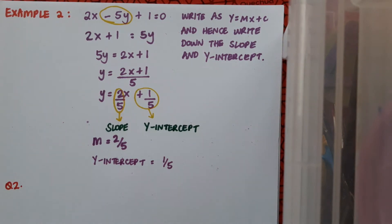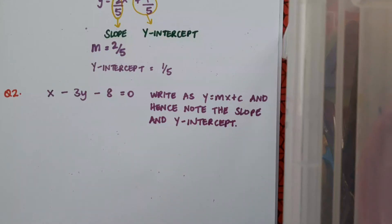Now a question for you: x minus 3y minus 8 equals 0. Write it as y equals mx plus c and note the slope and the y-intercept. Pause the video, complete that, then play and see if you're correct.